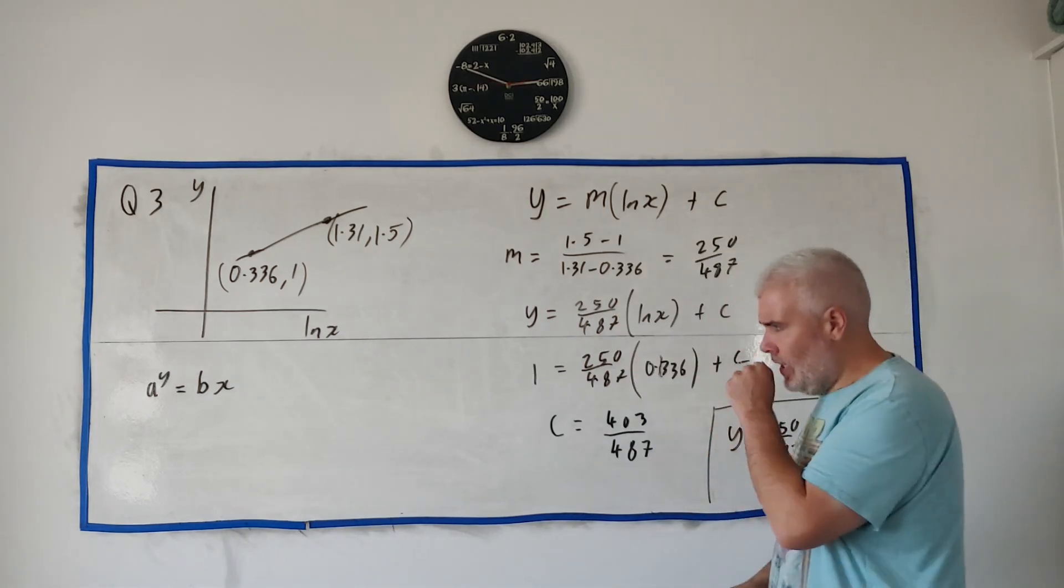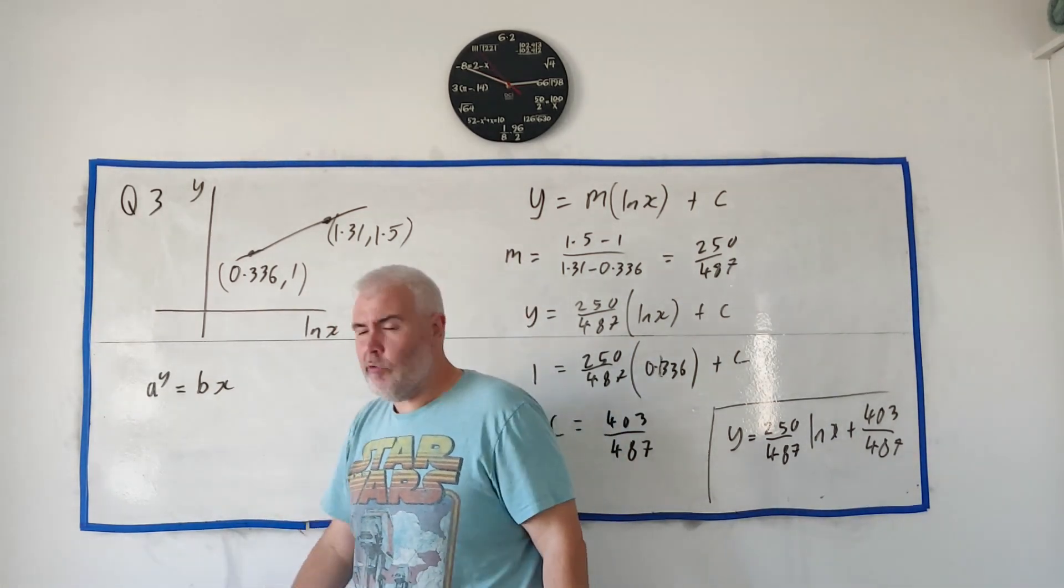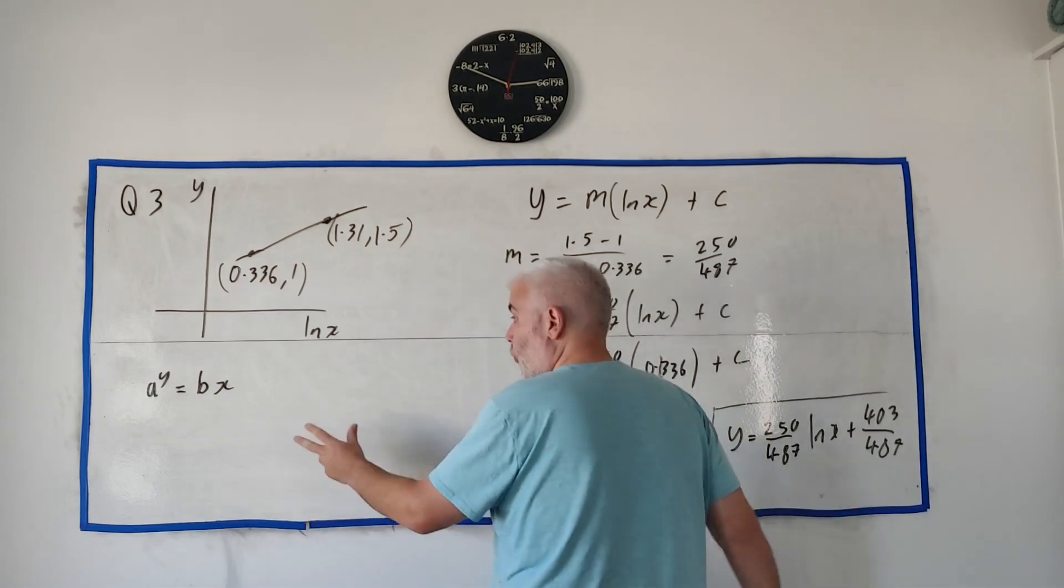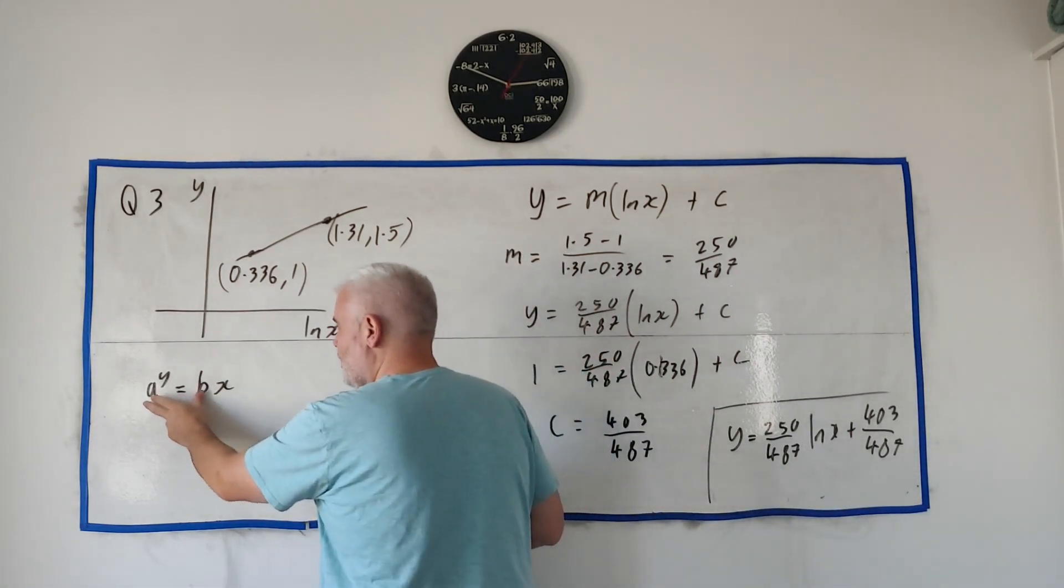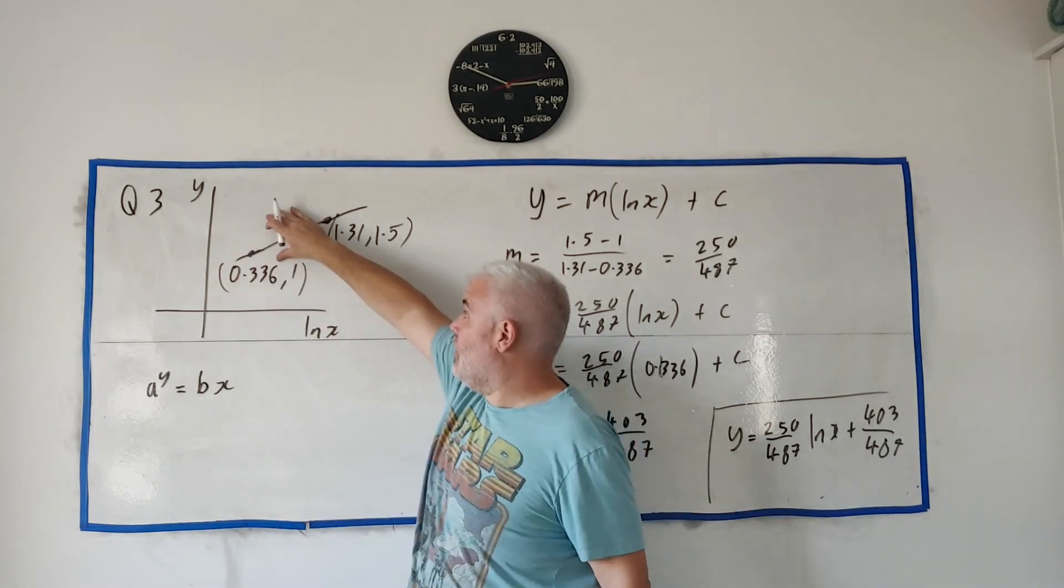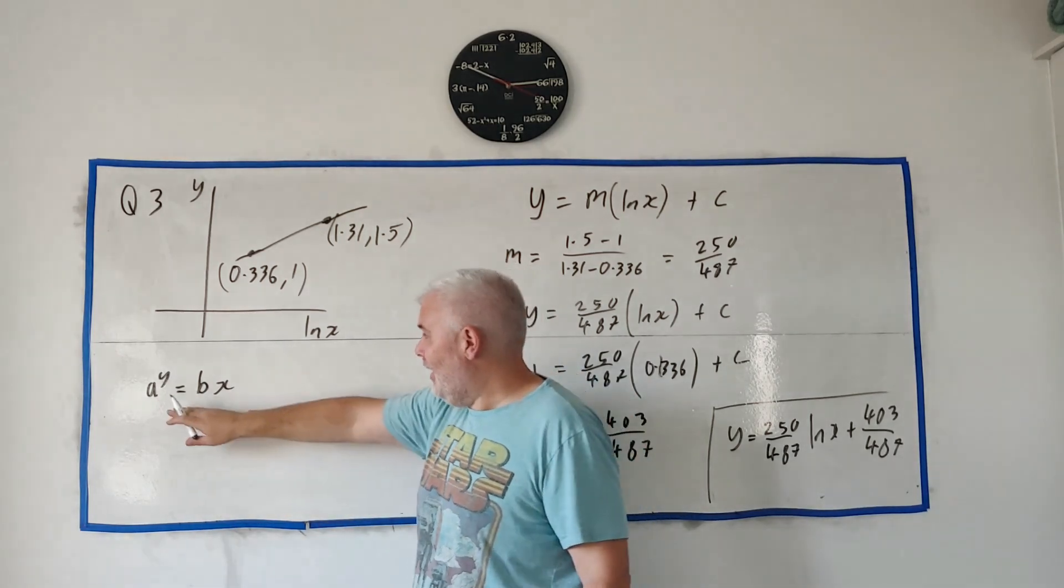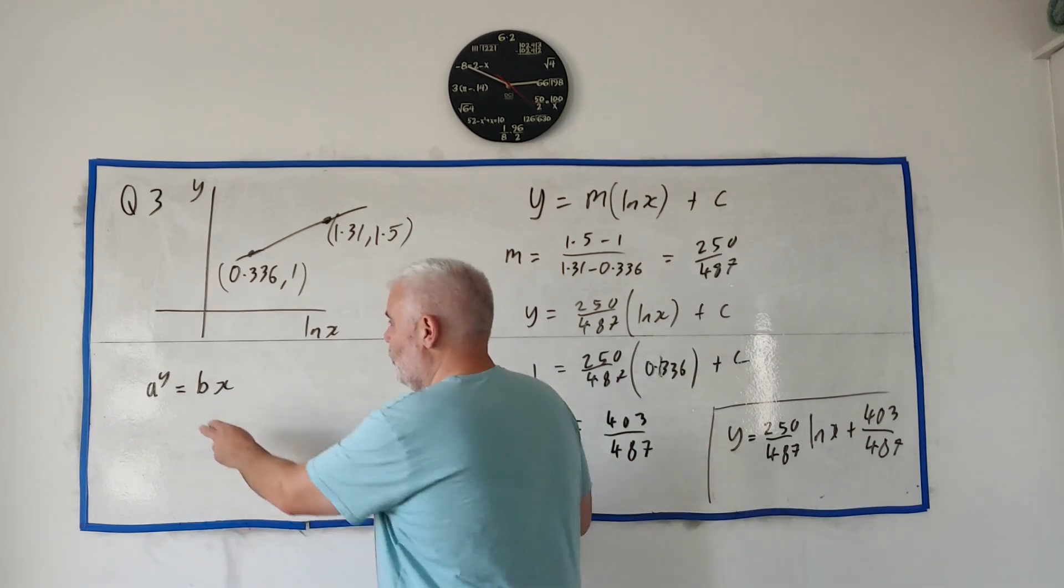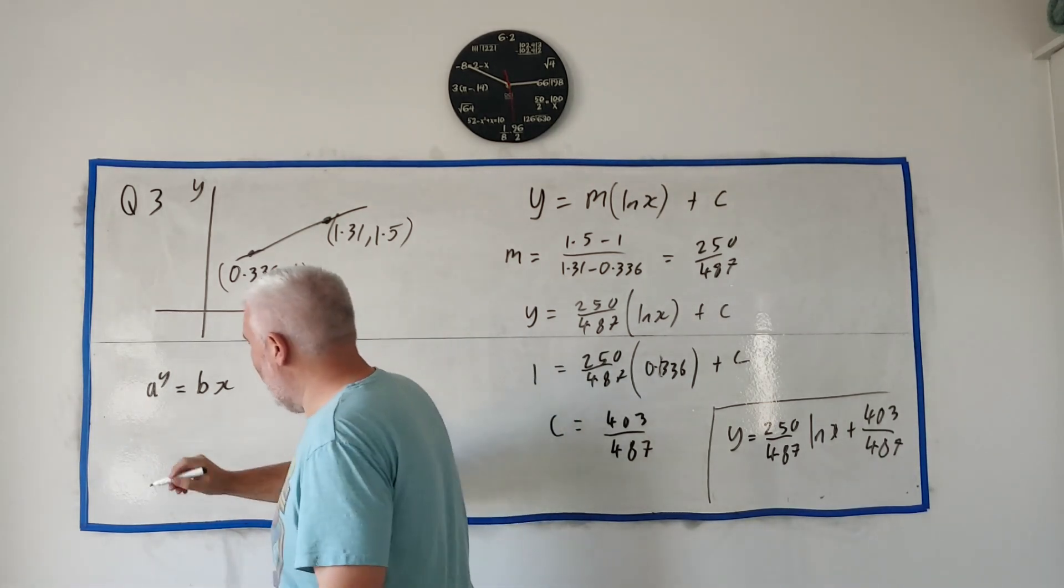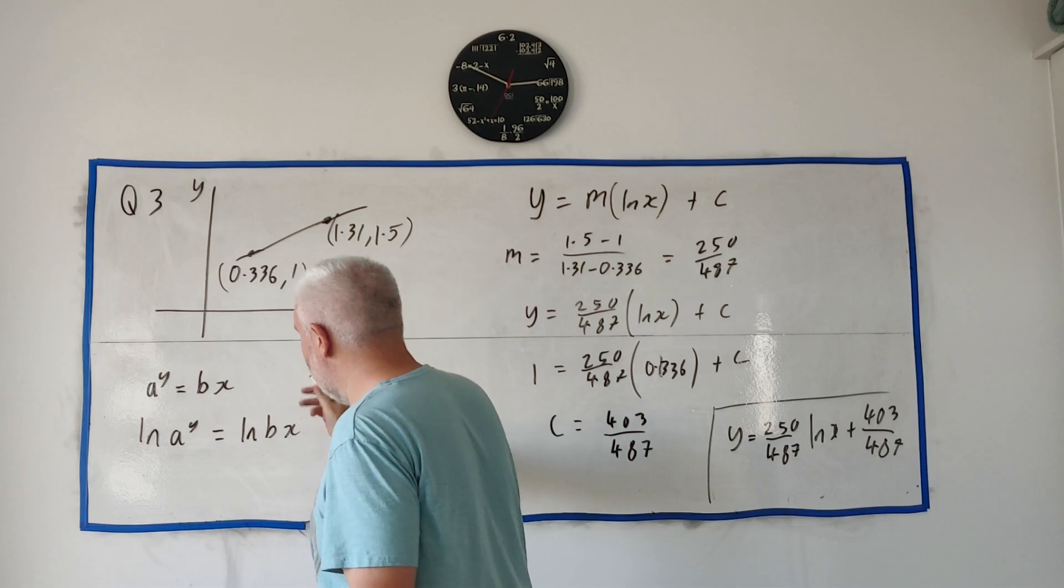So, we have an equation. y is equal to 250 over 487 natural log x plus 403 over 487. Okay, so I have the equation of this line here. How does that help me get a and b? That's where I have to do a bit of work on this guy here. I could have done this work first. In fact, in my notes, I actually did this work first. It doesn't make a difference. This looks absolutely nothing like this right now. But if I wanted to, because I know I want something that looks like y equals, I can get y equals here by just taking a natural log of both sides.